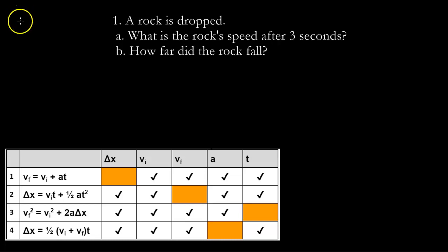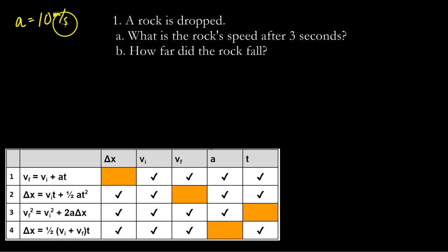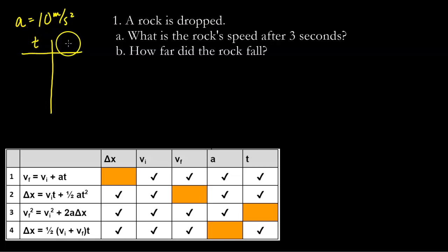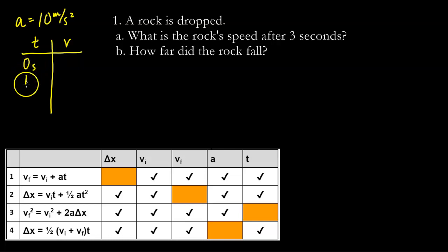Since we know that in freefall the acceleration is about 10 meters per second squared in the down direction, we can just mentally calculate this one. So let's say here's my time and here's my velocity. So that's zero, one, two, three seconds.